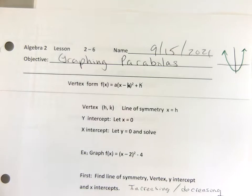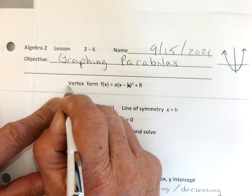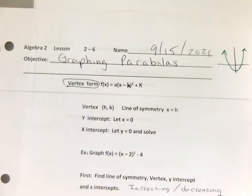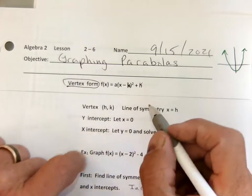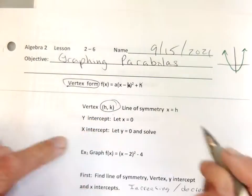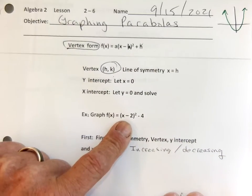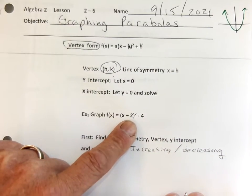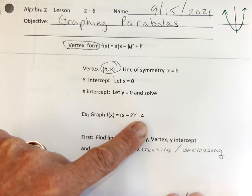All right, so if I take a look at this, example one is in vertex form. I like vertex form a lot because my vertex is just h, k. So if I look at example one, my vertex is just 2, negative 4.